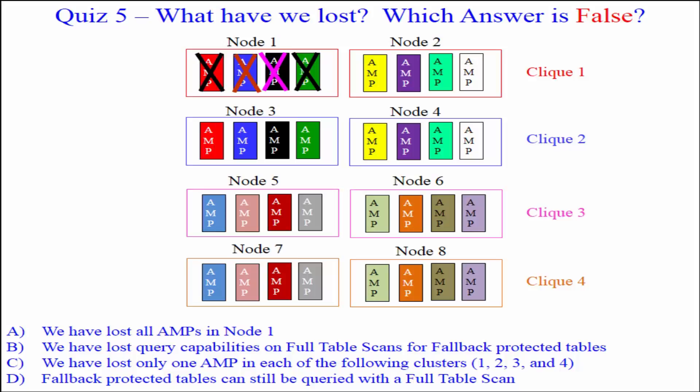C: We have lost only one AMP in each of the following clusters: Cluster 1, cluster 2, cluster 3, and cluster 4. Or D: Fallback protected tables can still be queried with a full table scan. Which one of those answers is false?